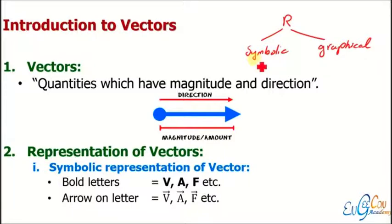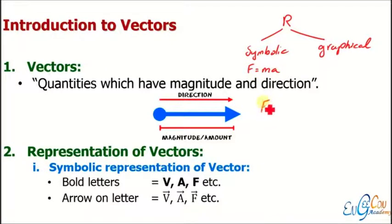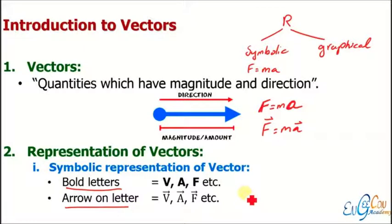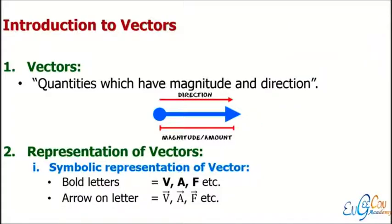For symbolic representation, consider the formula F equals ma. To identify which quantities are vectors, we write F and a in bold (thick) letters, while m remains as is. Bold letters indicate vectors, or alternatively, we place a half arrow or full arrow on the letter to discriminate vector quantities from scalars. So bold letters or an arrow on the letter is the symbolic representation of vectors.